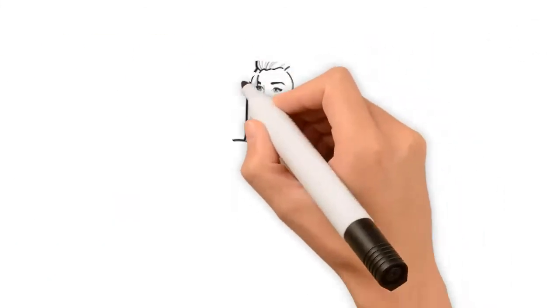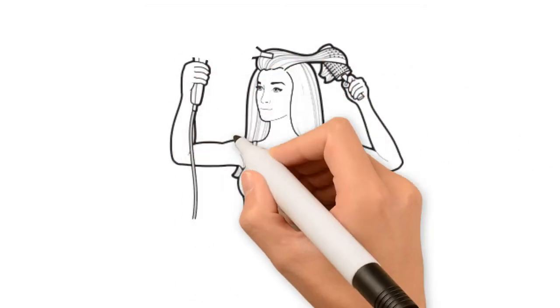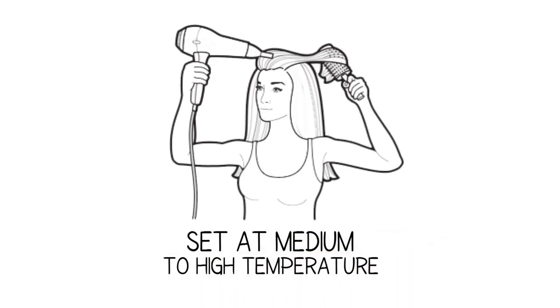Step 3: Blow dry section by section. Use a brush to hold each section taut while directing dryer heat set to medium to high temperature down hair lengths until section is completely dry.